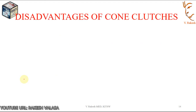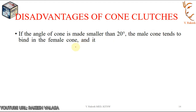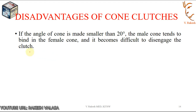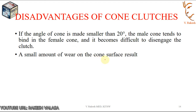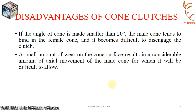Disadvantages of cone clutches: if the angle of the cone is made smaller than 20 degrees, the male cone tends to bind in the female cone and it becomes difficult to disengage the clutch. Also, a small amount of wear on the cone surface results in a considerable amount of axial movement of the male cone, which is difficult to accommodate.